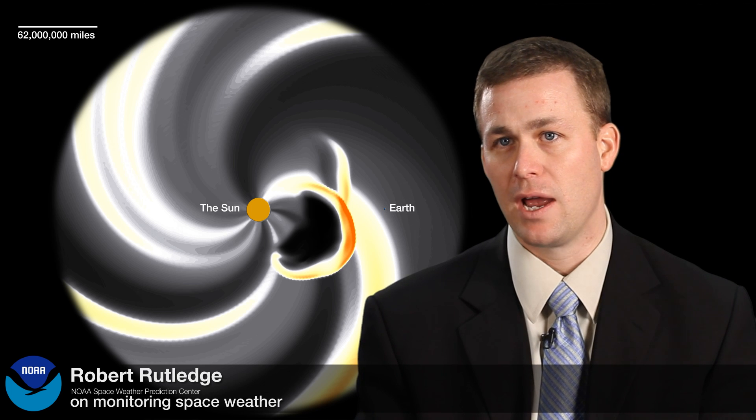Solar activity overall follows a cycle of about an 11-year pattern, where we have periods of very high activity with lots of sunspots, and then periods of almost no activity and no space weather.